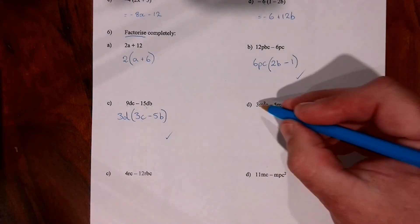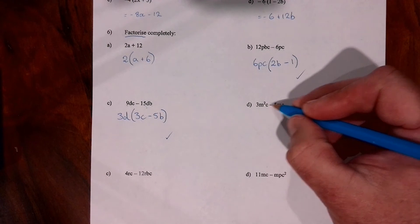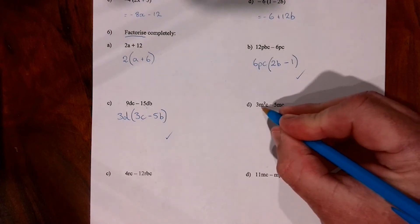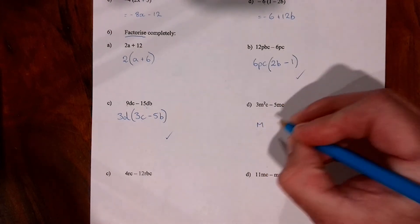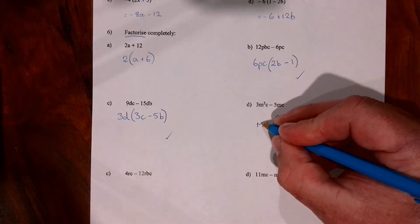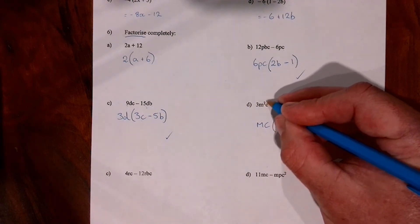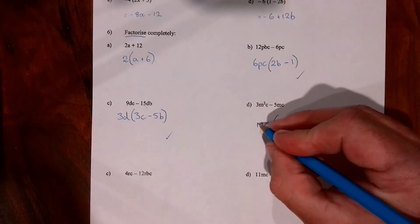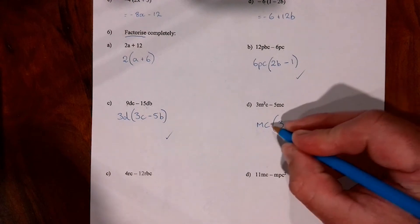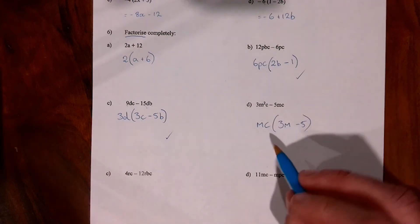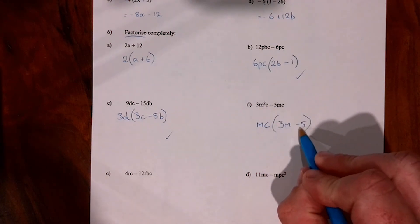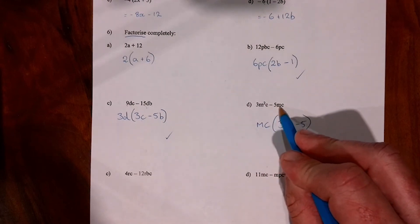Question 6d: we can't take any numbers out the front since there are no common factors for 3 and 5. So we take letters out: m's appear in both terms, c's appear in both terms, so mc goes out the front. The first term has m squared originally, so one m is factored out leaving m inside: mc times m makes m squared c. The second term has minus 5, and m's are already accounted for, so inside we have minus 5. Check: mc times 3m makes 3m²c, and mc times minus 5 makes minus 5mc. Correct.